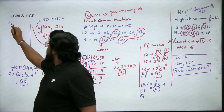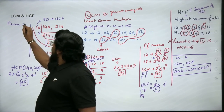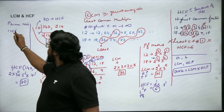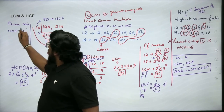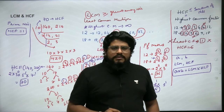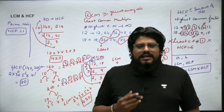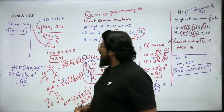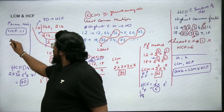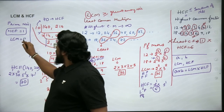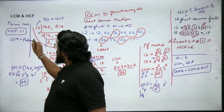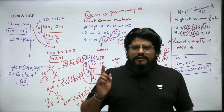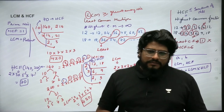A quick special case to remember: for any two prime numbers, HCF is always 1, because two prime numbers have only 1 as their common factor. And LCM of two prime numbers is simply the product of those two prime numbers.